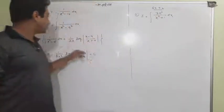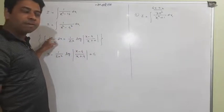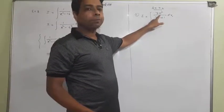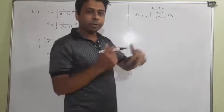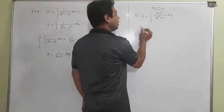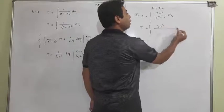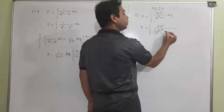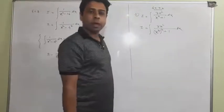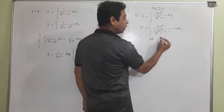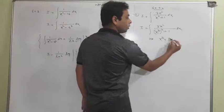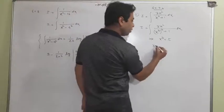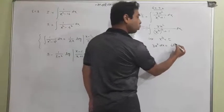Until now we had seen formulas having 1 upon a term, but here it is not just x squared — it is x to the power 6. Try to make a relation between the two. Write x to the power 6 as (x cubed) squared. Let x cubed equal t. Differentiate: 3x squared dx equals dt.